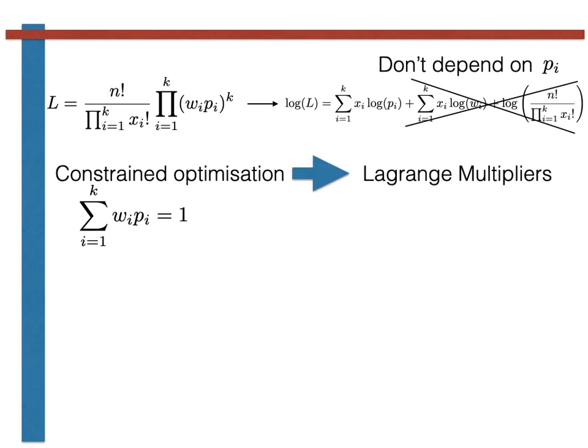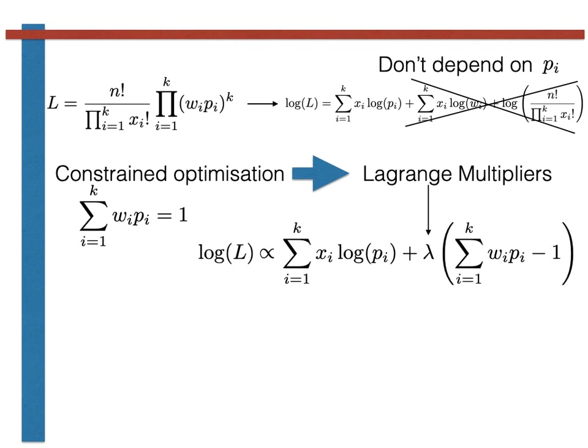We now complete our constrained optimization. Notice critically that the constraint of normalization is on the probability distribution we actually sampled, p prime, and that as such it is the sum over all i of wi pi that is equal to 1 here. When we construct our extended function using Lagrange's method of undetermined multipliers we thus find the following.